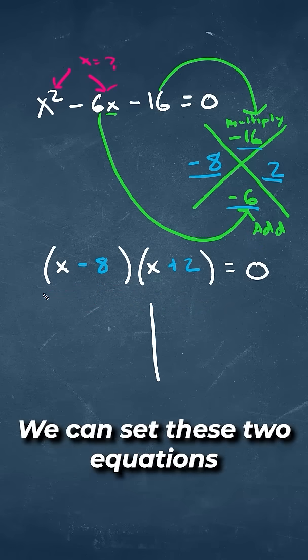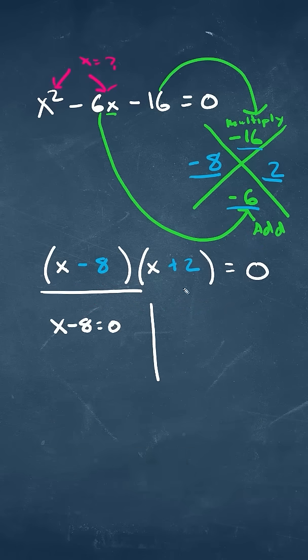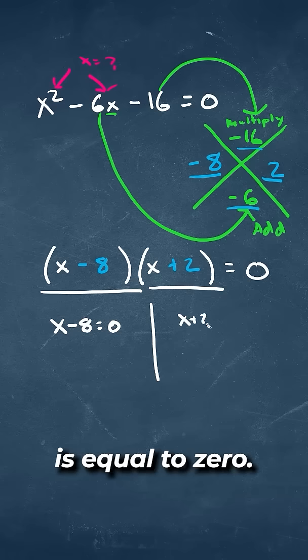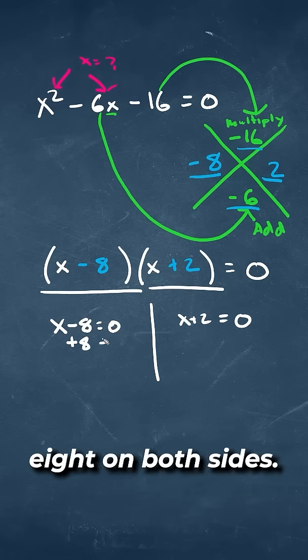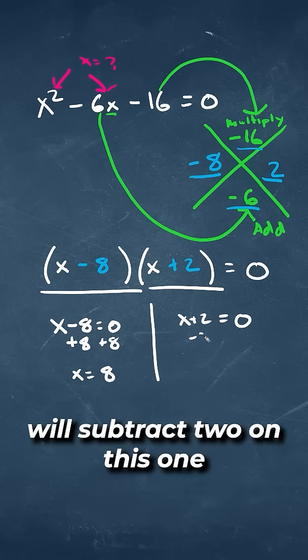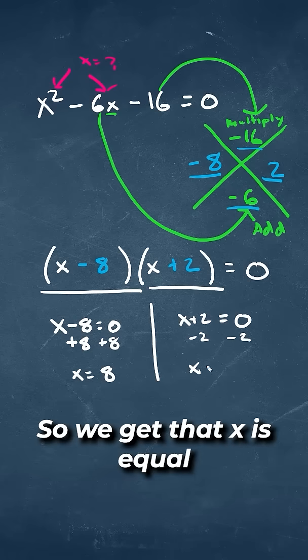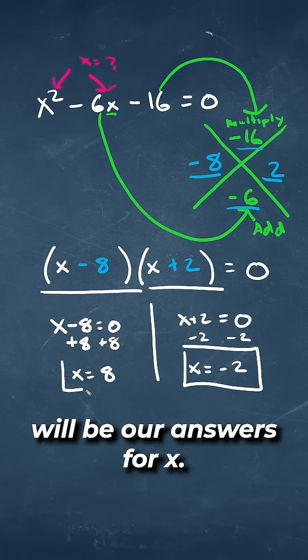And we can use this information to solve for x. We can set these two equations to equal to 0. x - 8 = 0, and x + 2 = 0. We'll have two cases for values of x. For this one, we're going to add 8 on both sides, so we get that x = 8. We'll subtract 2 on this one on both sides, so we get that x = -2. And these two values will be your answers for x.